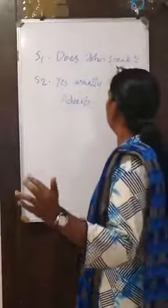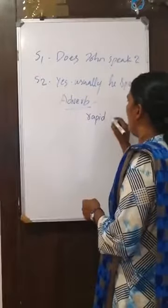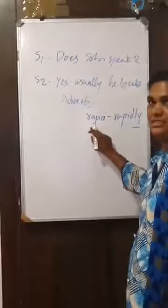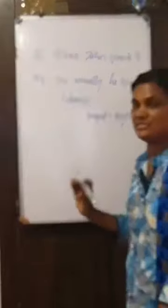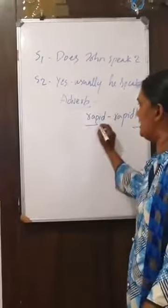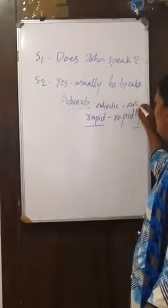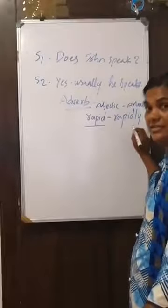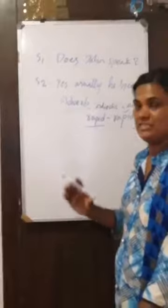We learned some words like this. Does John speak? It is: does John speak rapidly? I used the word rapid, and after that I added a suffix L-Y to it. So we can easily make adverbs with the help of adjectives. Rapid is an adjective, and rapidly is an adverb. Listen carefully: Does John speak rapidly? Yes, usually he speaks rapidly.